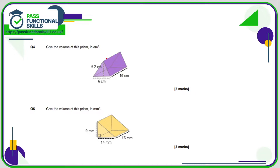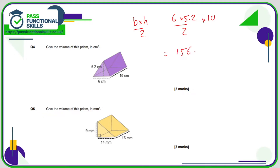Now we need to calculate the volume of this prism. The volume of a prism is the area of its face multiplied by its depth. Here the face is a triangle — the formula for the area of a triangle is base times height divided by 2. So that's 6 times 5.2 divided by 2, then multiplied by its depth which is 10, and that comes to a total of 156 cubic centimeters.